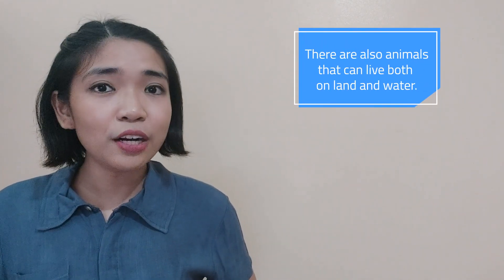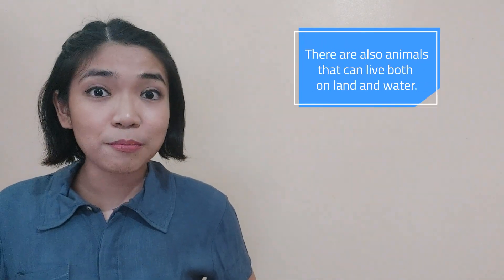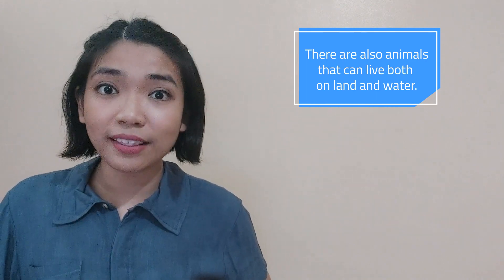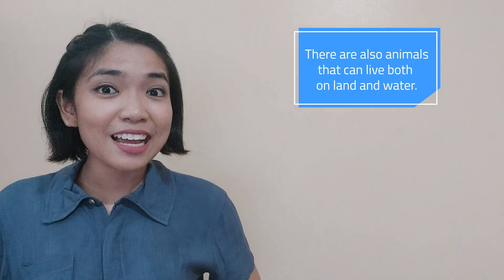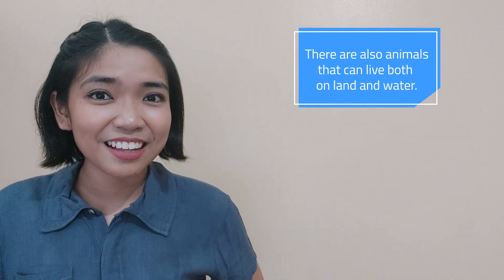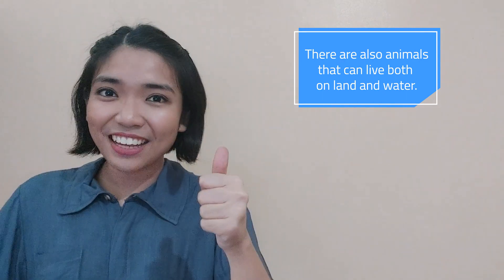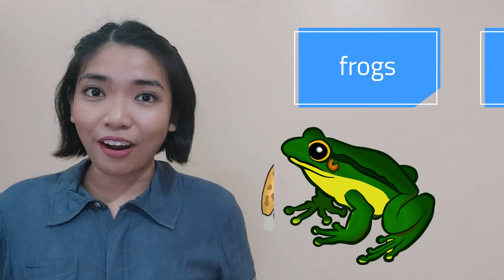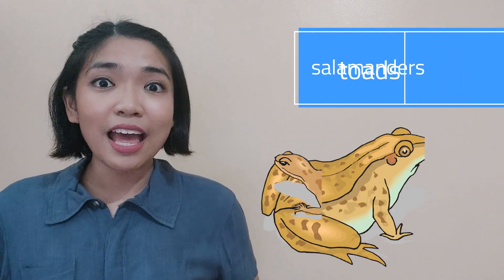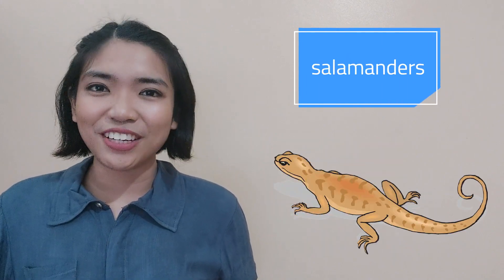There are also animals that can live both on land and water. These are amphibians. Examples are frogs, toads, and salamanders.